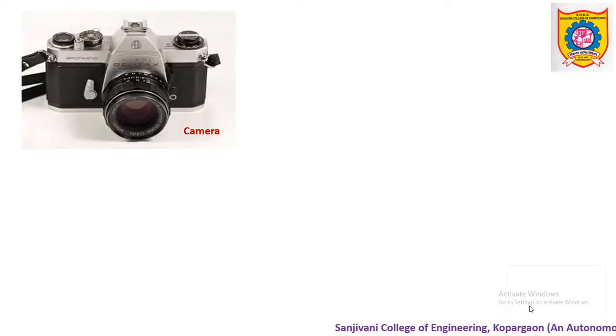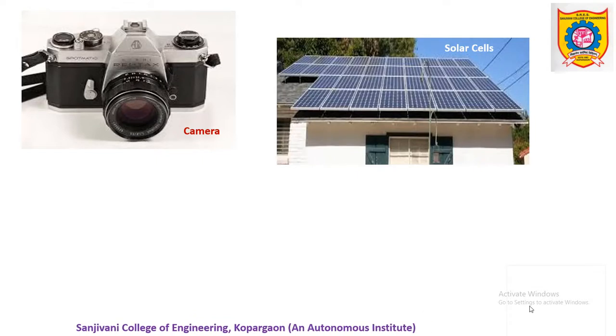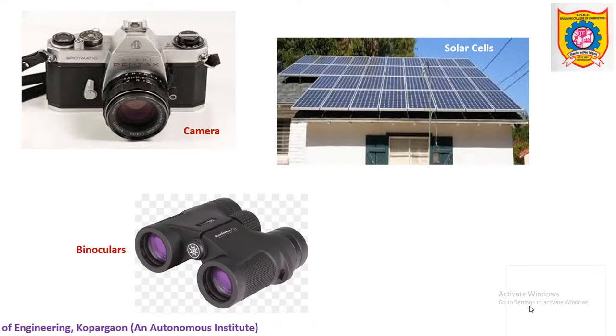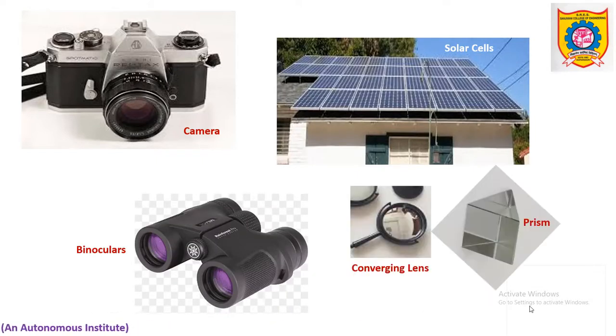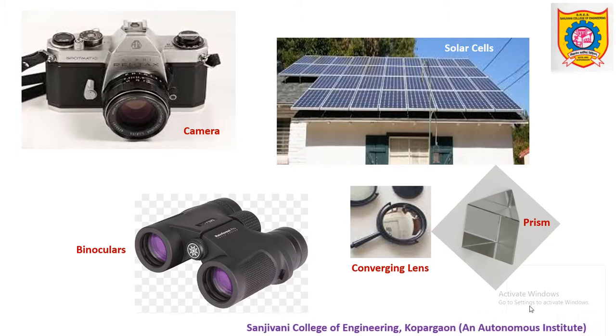You might be aware about the coatings in camera lenses, coated solar cells, lenses in binoculars, or optical devices like prisms or converging lenses which are coated in nature. By which material are these devices coated? These are coated by anti-reflecting thin films. Definitely there is a certain role of these anti-reflection coatings.